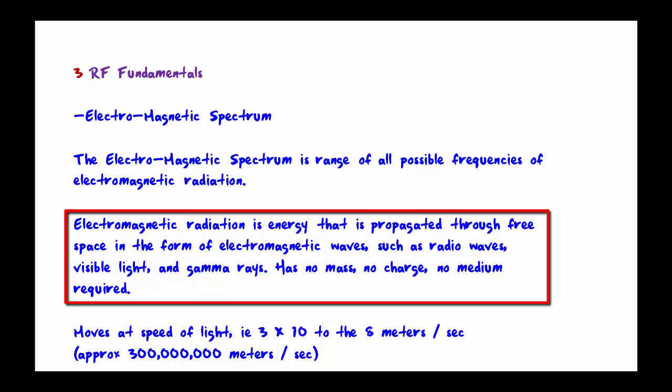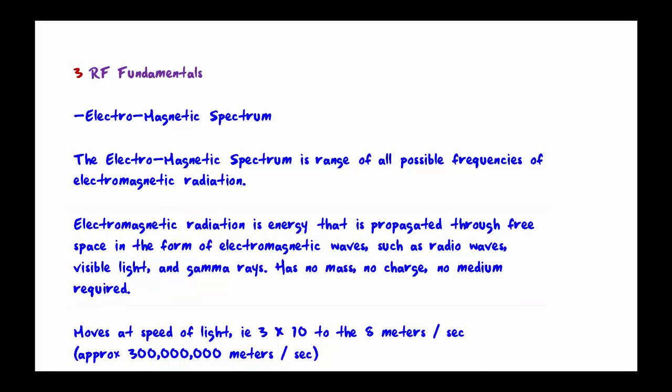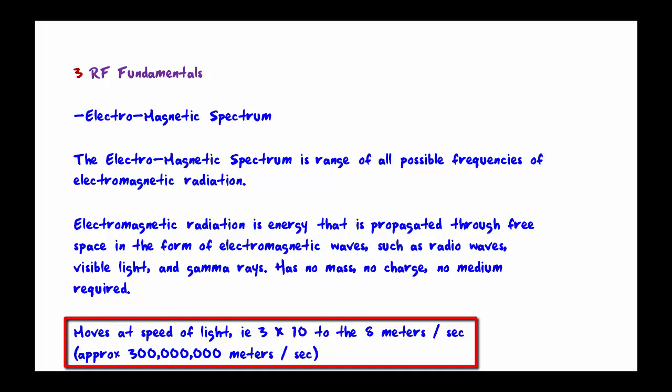Also notice that radio waves move at the speed of light, which is approximately 300 million meters per second. To give you a little perspective on how fast that is, assume that the Earth is around 25,000 miles around. If you were traveling at the speed of light, you could go around the world seven times in about one second.